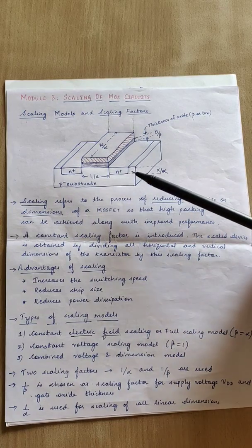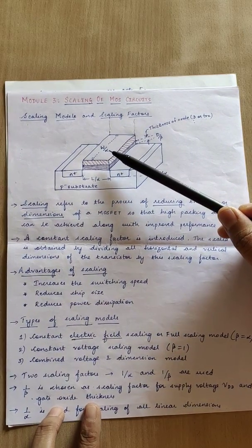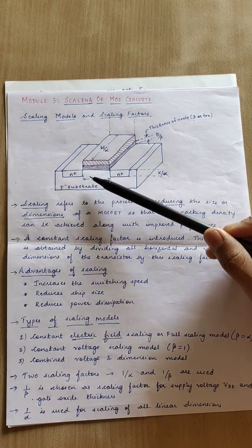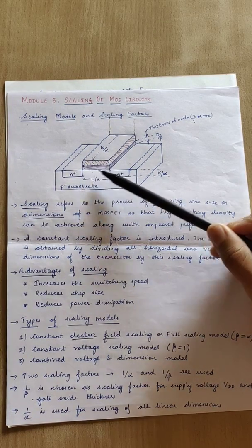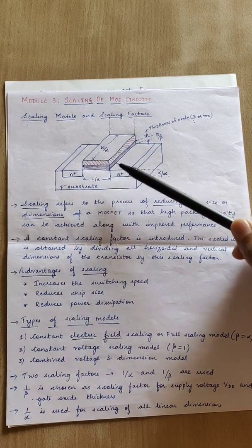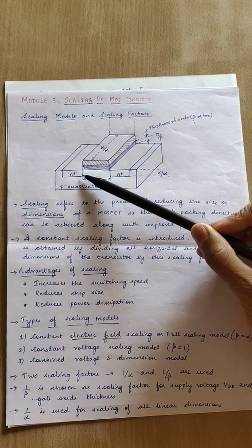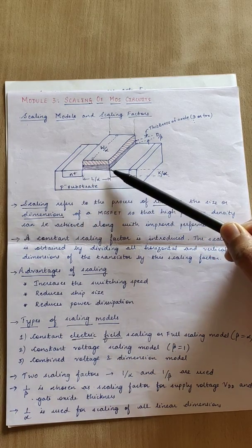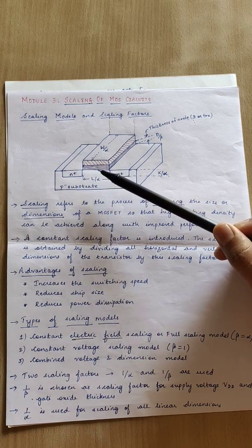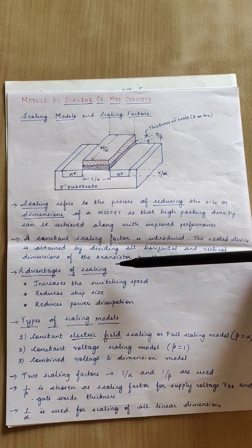This represents a three-dimensional model of an NMOS MOSFET. This represents the source and the drain, and this is the gate region. The distance between the source and the drain — the region between them — is the channel region, and that distance is the channel length. When we reduce the size of the transistor we basically reduce this channel length. When the channel length is reduced, the time taken by the charge carrier to move from source to drain reduces. This means switching on and off happens quicker, increasing switching speed — one of the most important advantages of scaling.